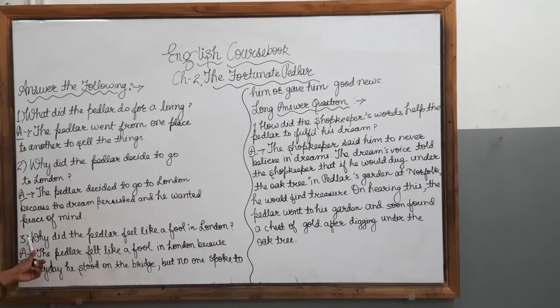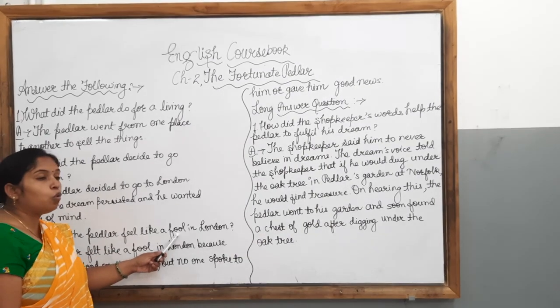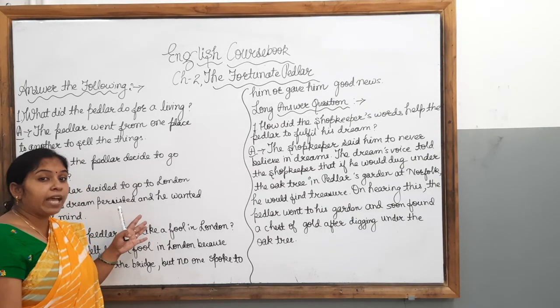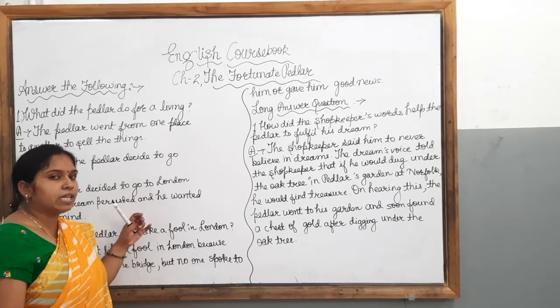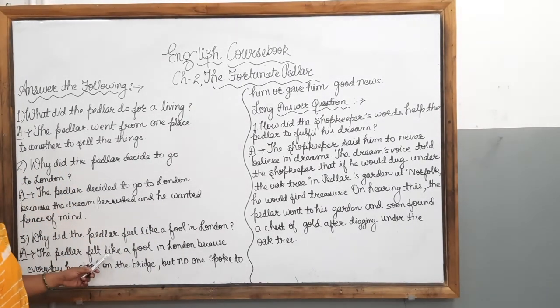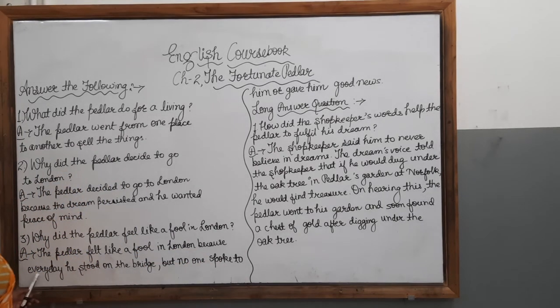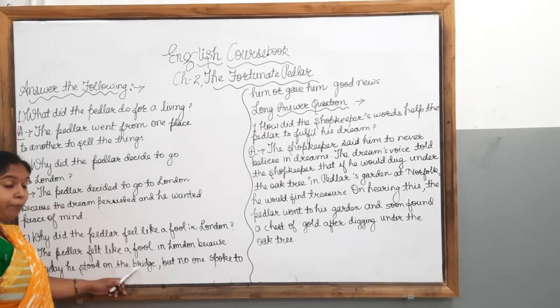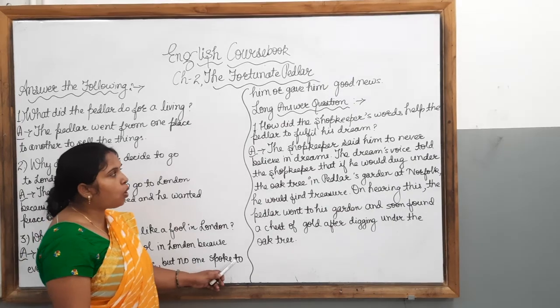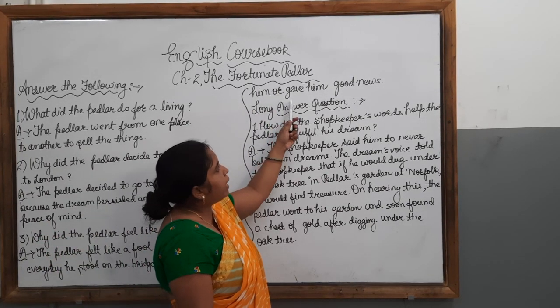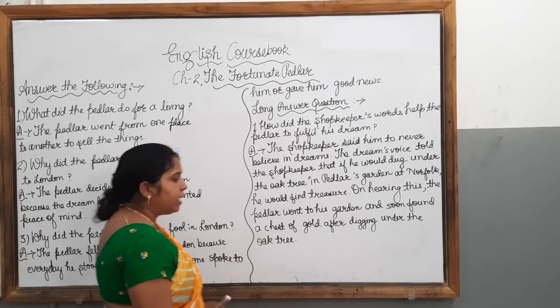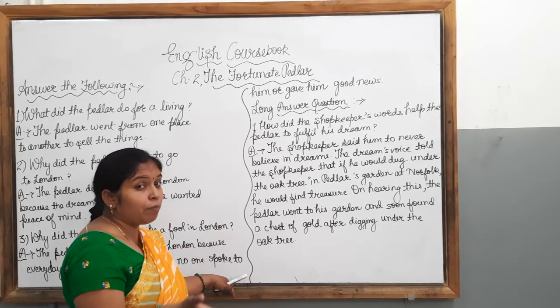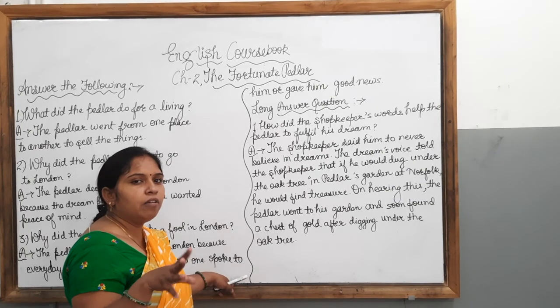Okay. Now next question, why did the pedlar feel like a fool in London? Now when he reached there in London, near a bridge, then why was he looking like a fool to others? So the answer is, the pedlar felt like a fool in London because every day he stood on the bridge, but no one spoke to him or gave him good news. That is why he was looking like a fool there.